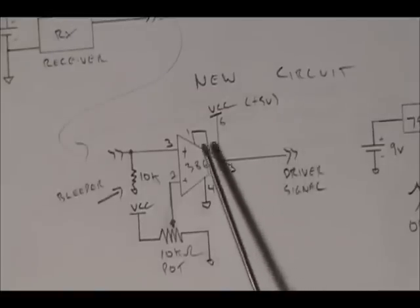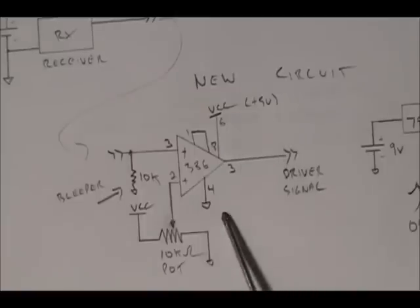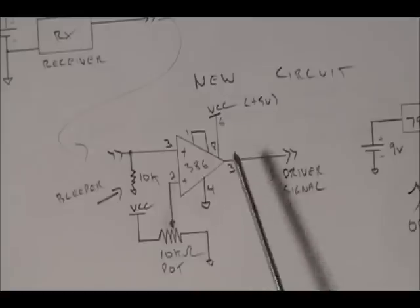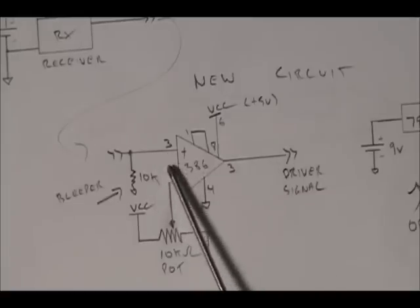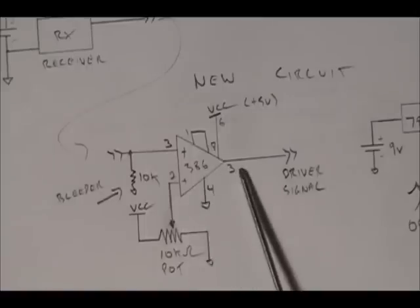Of course we're going to connect pin 6 to VCC to our 5-volt line, pin 4 to ground. And these are our gain lines, pins 1 and 8 should be connected together for maximum gain. So as soon as the voltage of the positive becomes higher than the voltage of the negative, we're going to get saturation at the output.